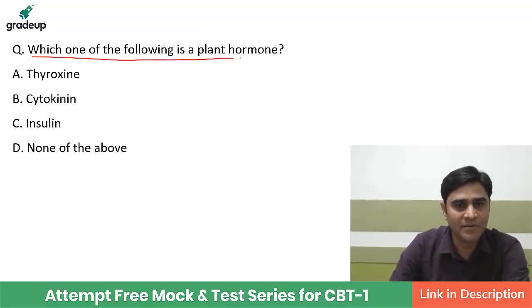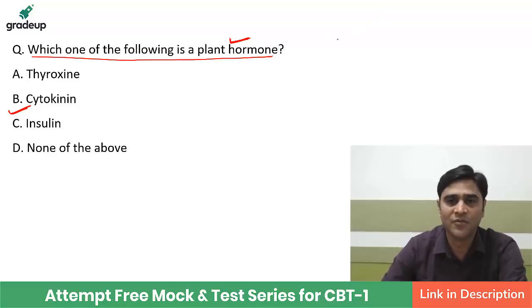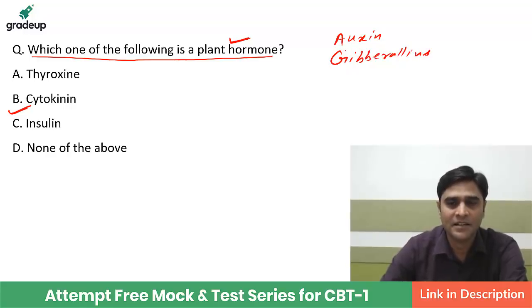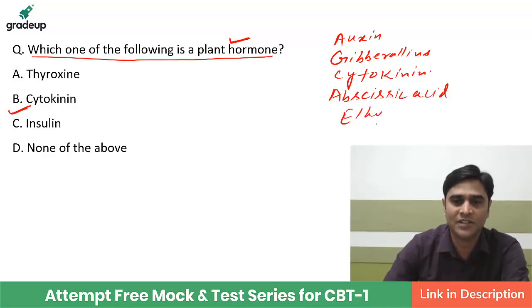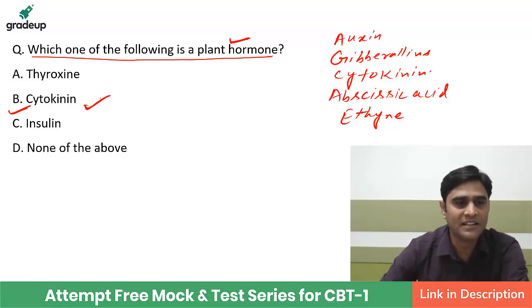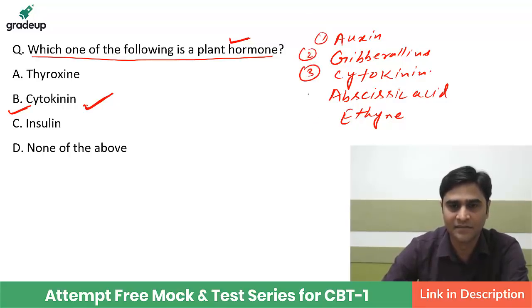Which of the following is a plant hormone? The options are thyroxine, cytokinin, insulin, or none of these. Your answer should be cytokinin. There are five plant hormones: number one is auxin, second is gibberellin, fourth is cytokinin, then abscisic acid, and next is ethylene. So if the question asks which is a plant hormone, it is cytokinin.